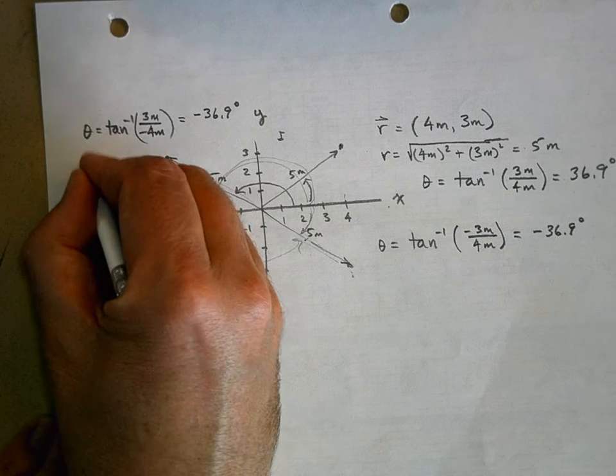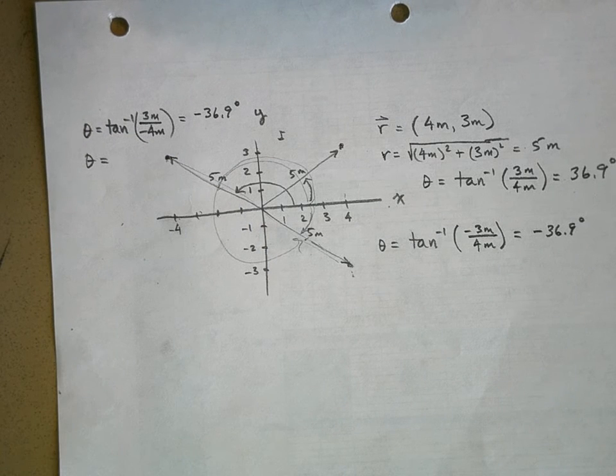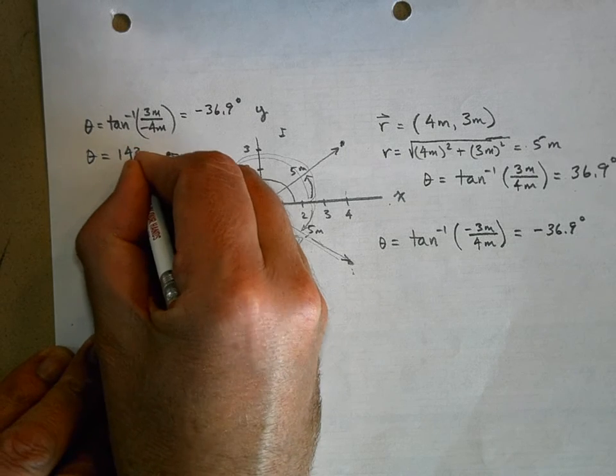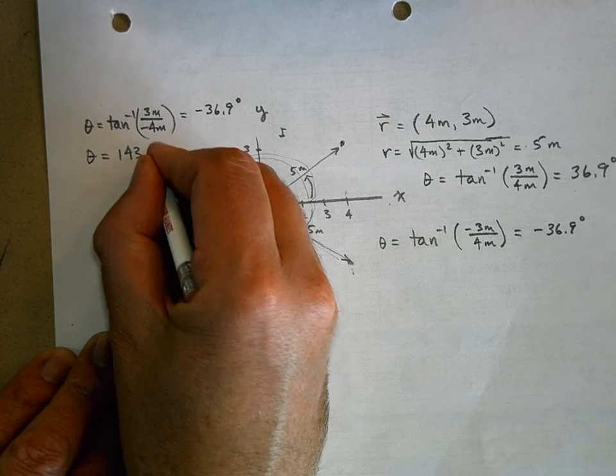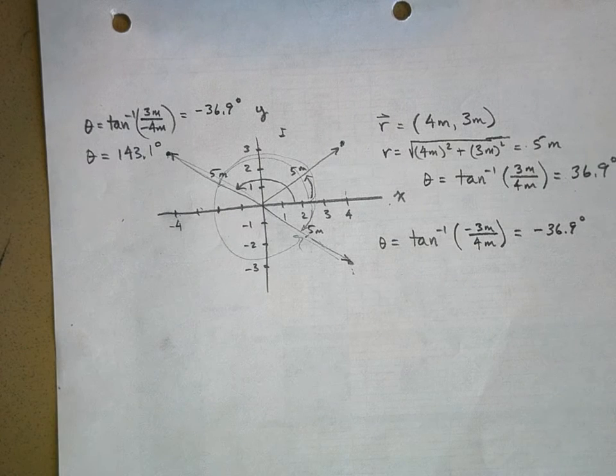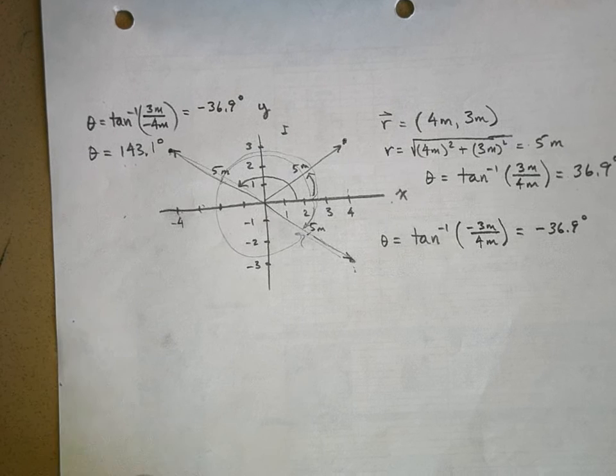So what you need to do to get to this angle right here is add 180 degrees to your answer. So theta is negative 36.9 plus 180 degrees. It's 143 degrees. 143.1 degrees from the positive x-axis. And this is your angle. You're calculating.